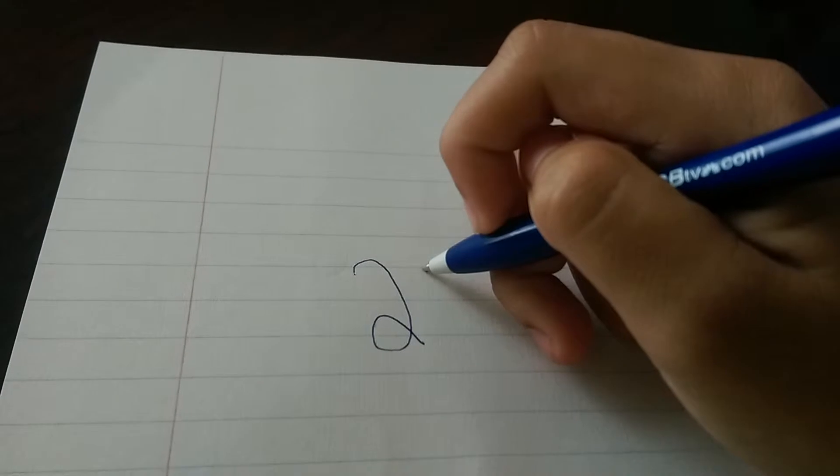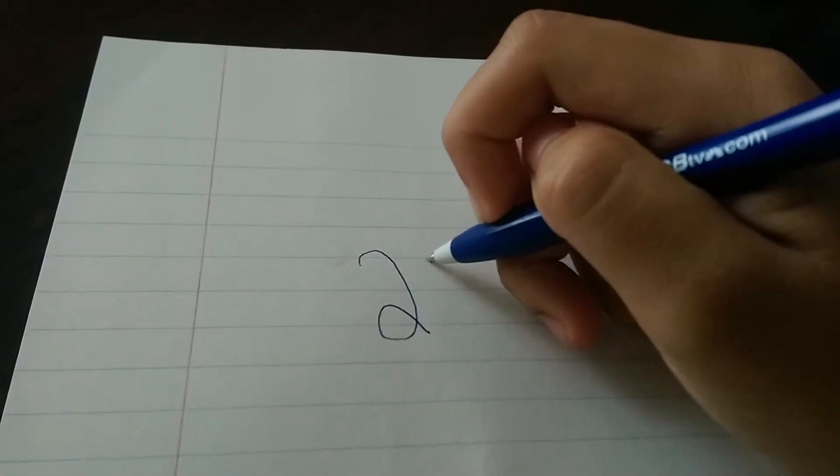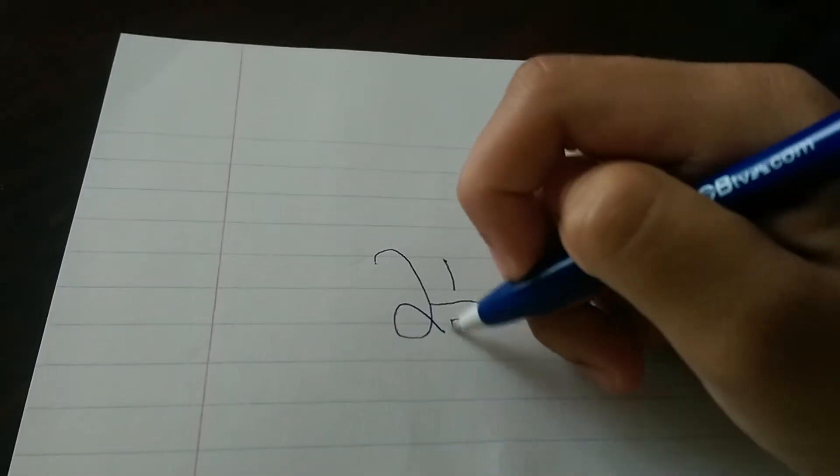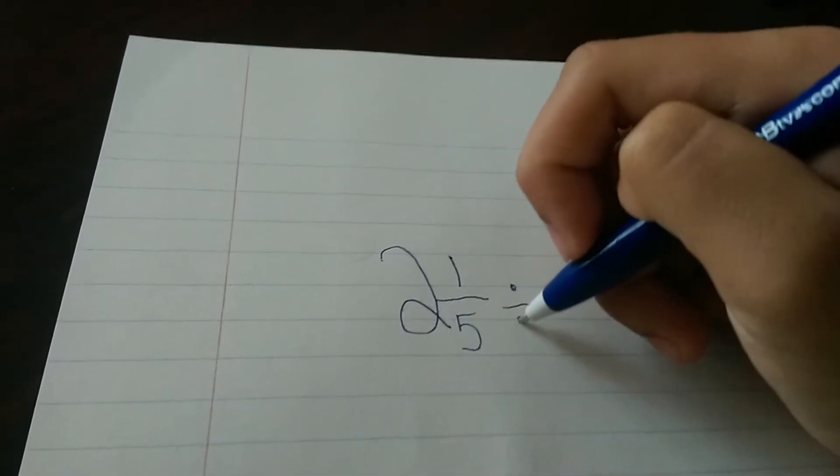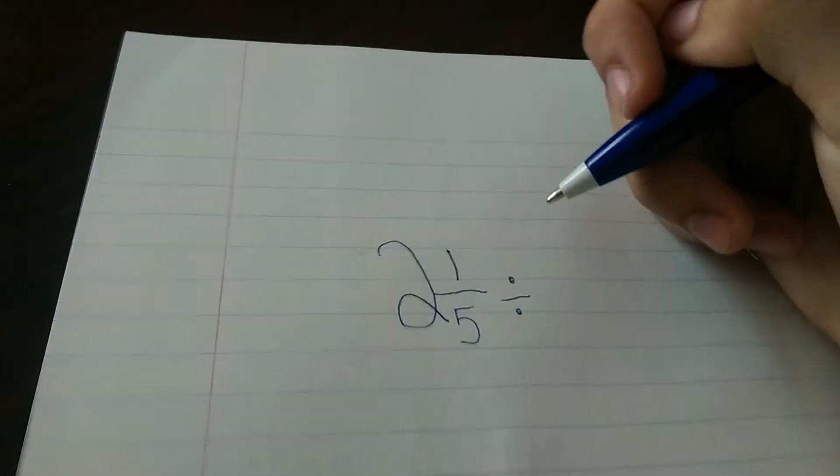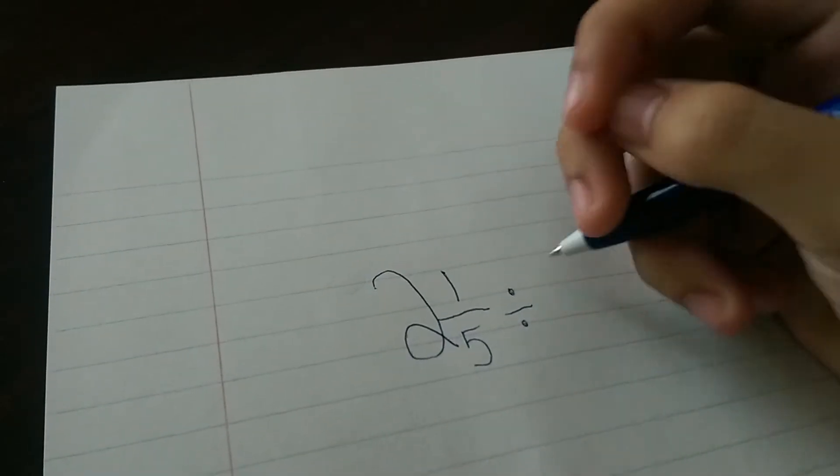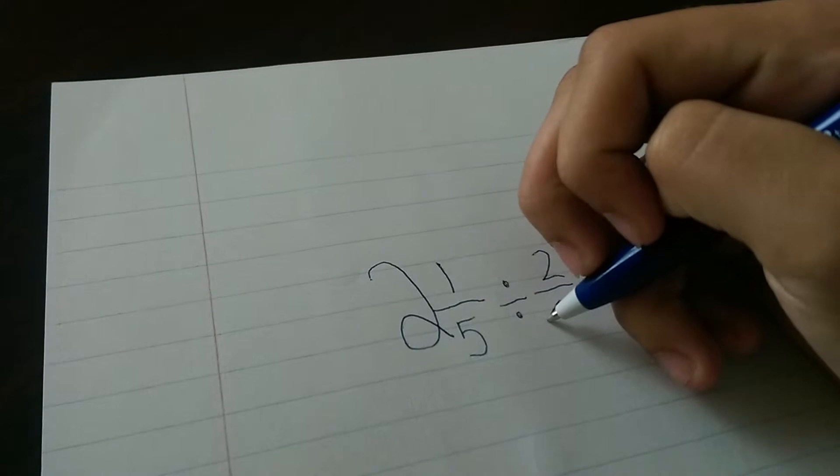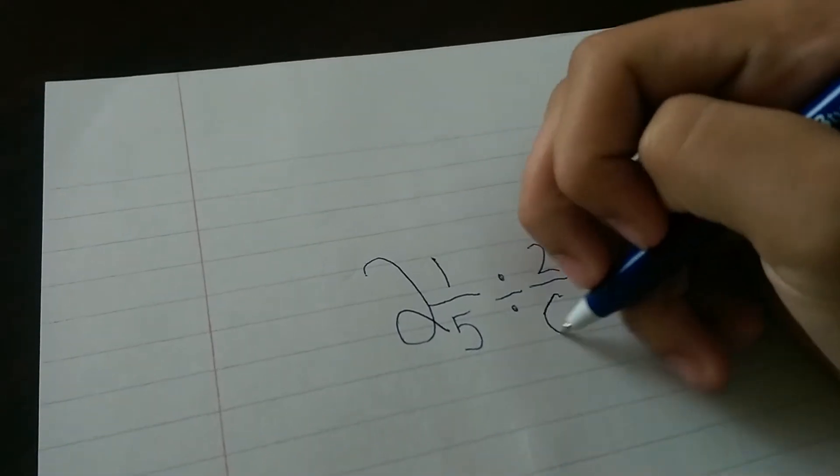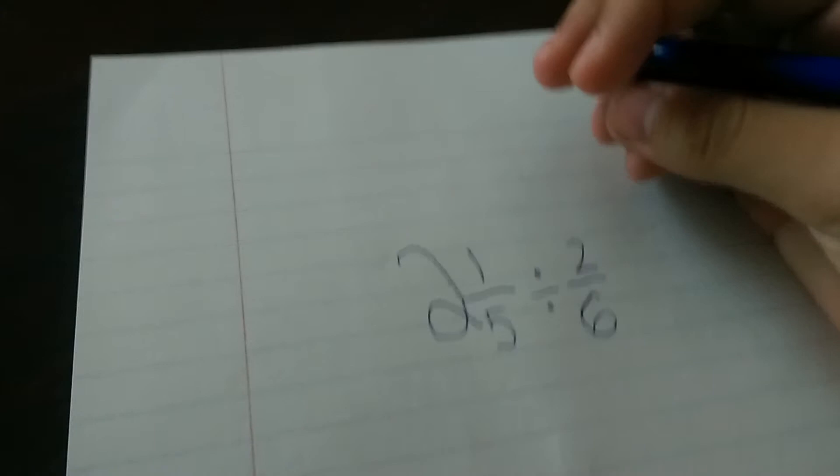Anyway, so let's say we have 2 and, I don't know, 1 fifth, yeah, that'll work, divided by, let's say, 2, 4, 2, 6, how about that, yeah, that took a while.